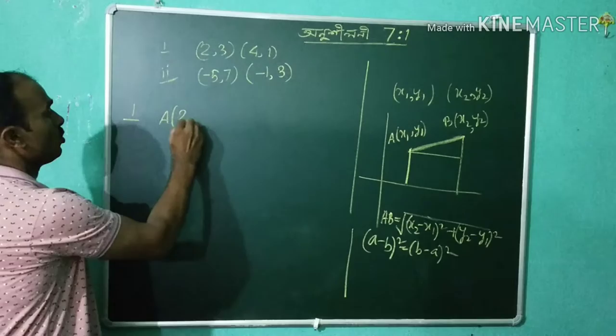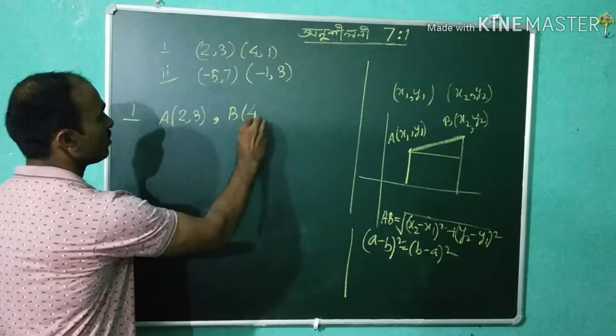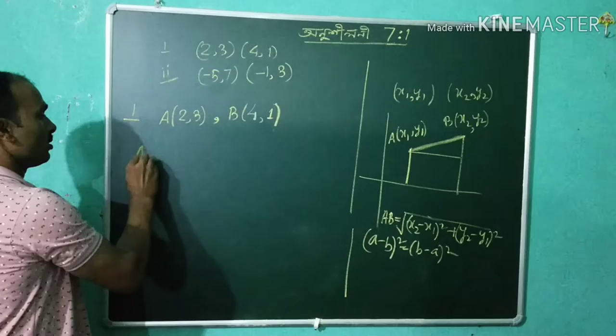Now for an example: A is (2, 3) and B is (4, 1).